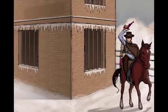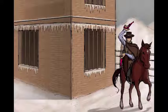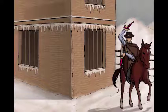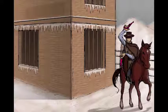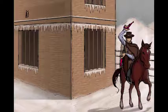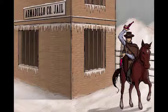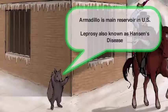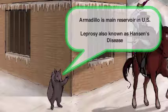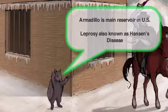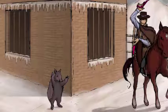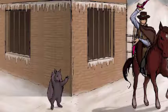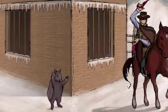An important aspect of leprae you should definitely know is its reservoir. In the US, the reservoir is actually the armadillo — pretty random, though I did mention we were in Armadillo County, and this is the Armadillo County Jail. We're going to draw a little armadillo down here in the front, and his name's Hansen, because you may also hear leprosy referred to as Hansen's disease.